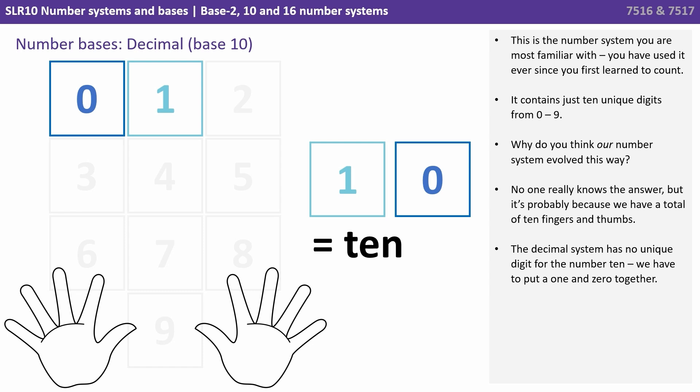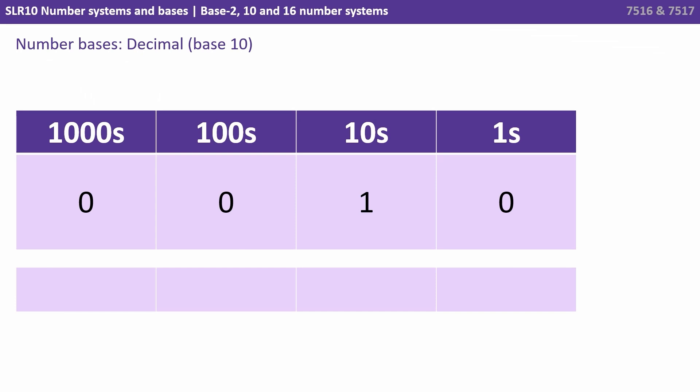The decimal system has no unique digit for the number 10. We have to put a 1 and a 0 together. Here we see a base 10 number line. On the far right we have the lowest weighted column, that's our 1s.